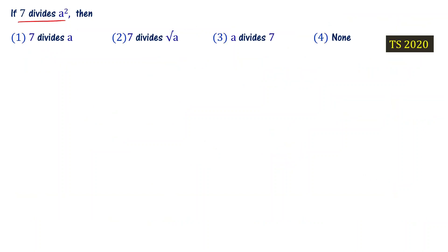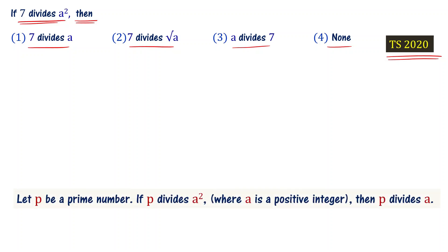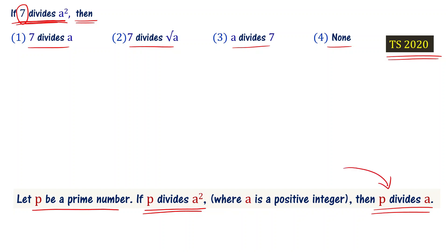If 7 divides a², then which statement is correct? Options: 7 divides a, 7 divides √a, a divides 7, or none. This is from policy 2020. Let P be a prime number; if P divides a², then P divides a also. Here P = 7 is a prime number, so as per this statement, 7 is going to divide a also. Choice 1 is the right answer.